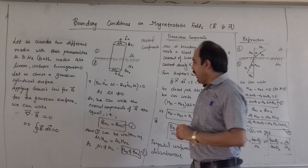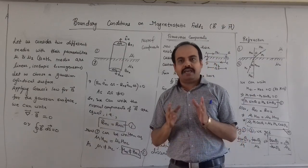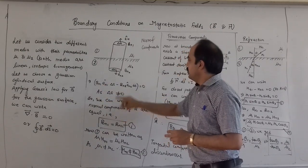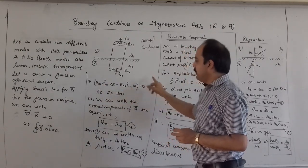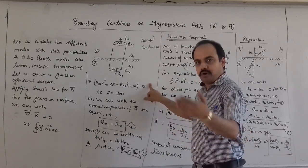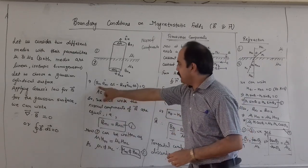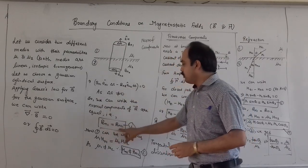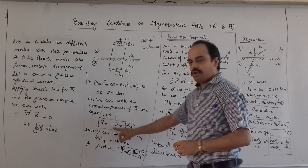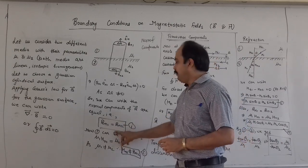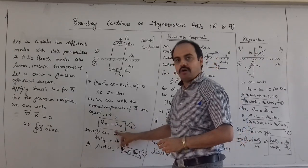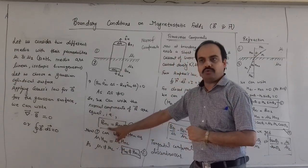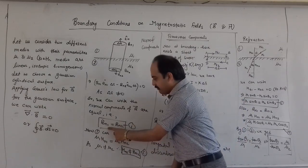Since delta S cannot be equal to 0, as it is the area of the circular surfaces, therefore we get BN1 minus BN2 equal to 0, or in magnitude BN1 equals BN2. So we can say that the normal components of B are equal or continuous. Writing in terms of H, we get mu1 times HN1 equals mu2 times HN2.